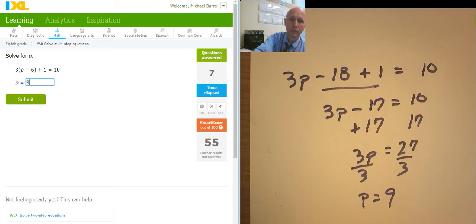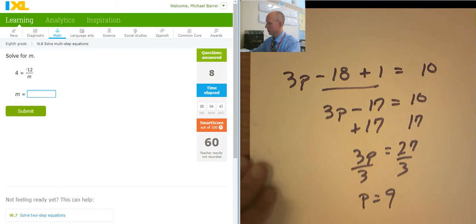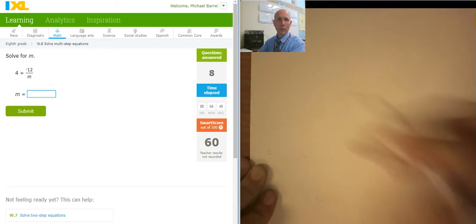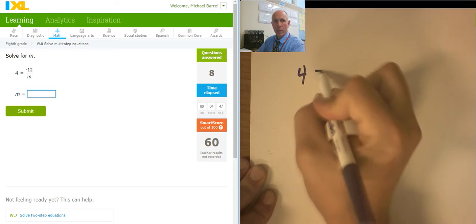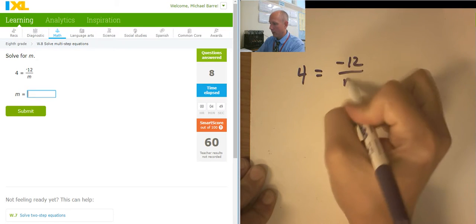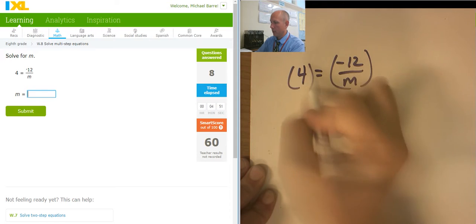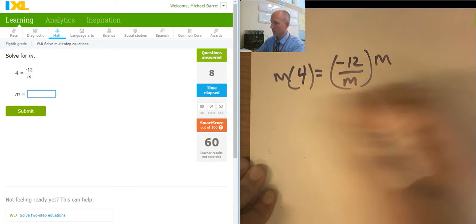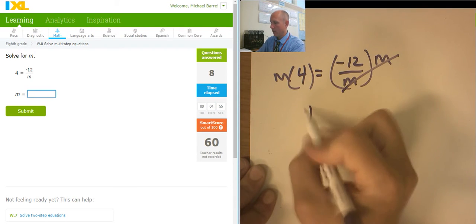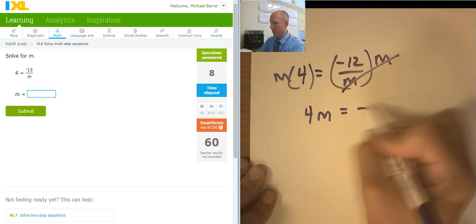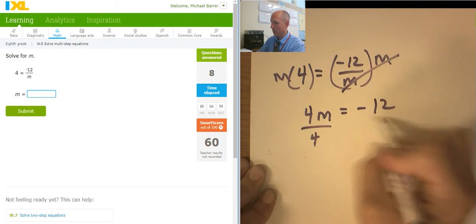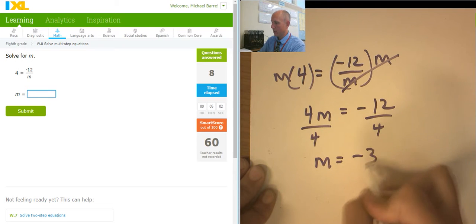4 equals 12 over m. It starts its life as a fraction. So I'm going to put both sides in parentheses. The m's cancel out. I now have 4m equals negative 12. And I'll divide both sides by 4. So m equals negative 3.